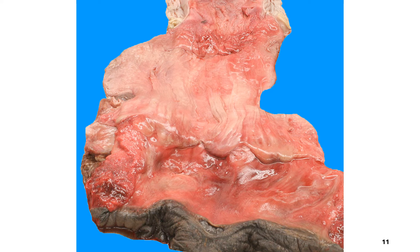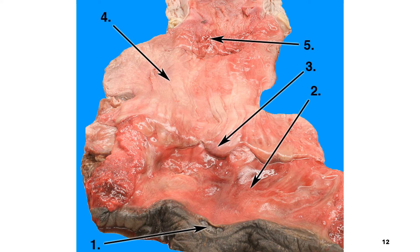This photo represents the longitudinal cut through the posterior and the anterior vagina. The structures found in this longitudinal cut include: number one, the clitoris; number two, the posterior vagina itself; number three, the vulvovaginal sphincter; number four, the anterior vagina; and the topmost part is the cervix.